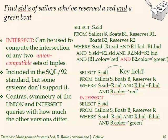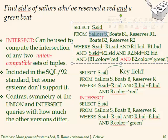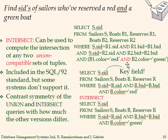If we want to do the join, we need to specify two reservations. Boat B1 with R1 will be reservation one, and then we join B2 with R2 as the second reservation. The sailors table is not needed in the textbook answer, but we include it in our implementation. So we have two reservations: reservation one with color red, and reservation two with color green.